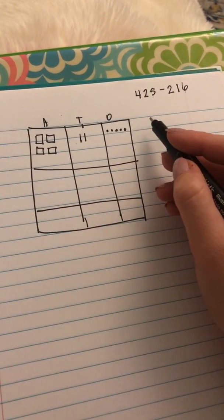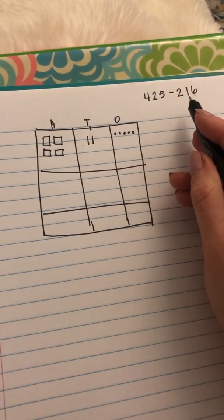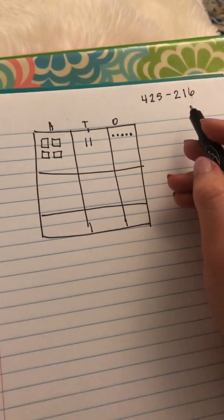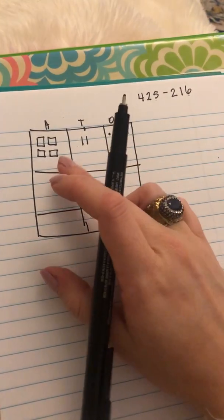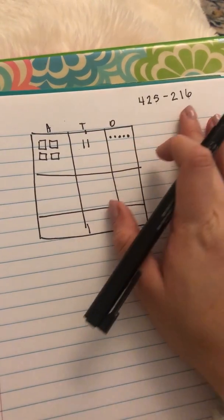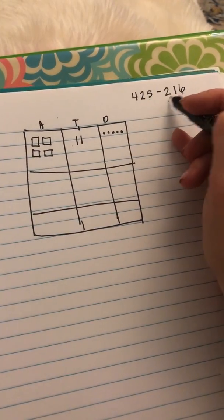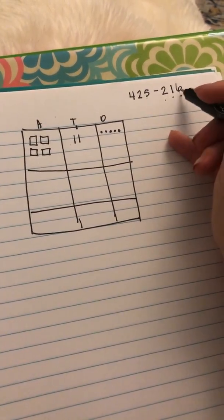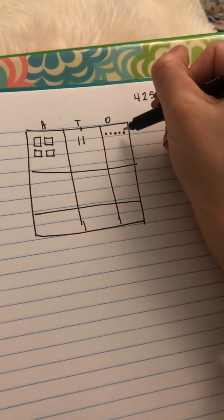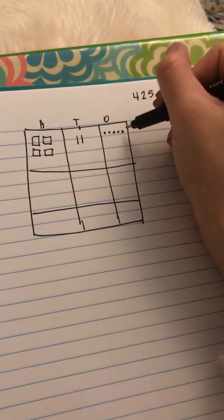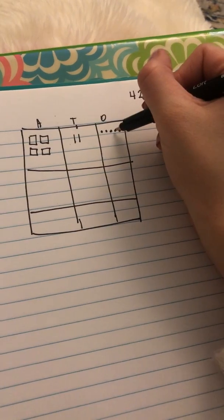All right, and then the next thing we're going to do is we are going to be taking away 216. So we're going to be crossing out 216 of these. So I go ahead and I look at each of these individual numbers starting with the ones place, and I want to cross out six here. But before I do that, I just want to make sure I have my six.